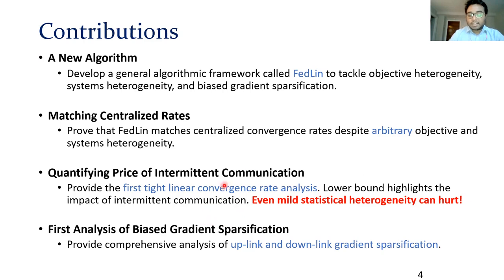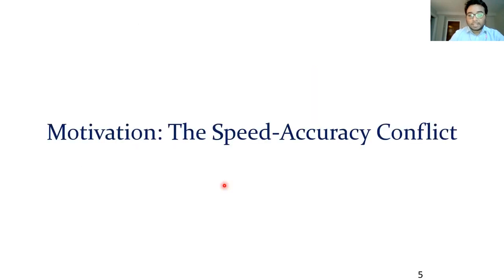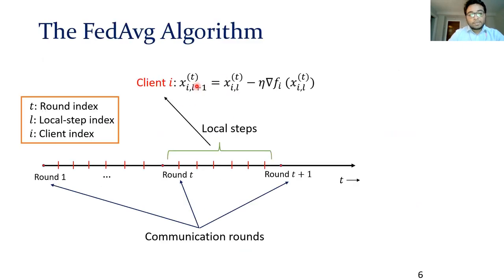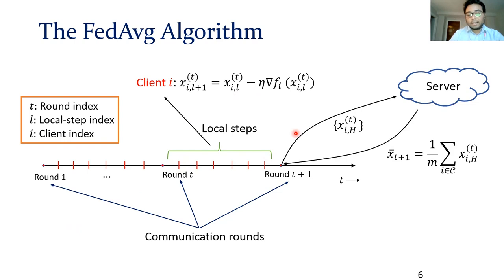Now, before I get to our results, let's quickly go over what we know about existing algorithms. The most popular FL algorithm, known as FedAvg, tries to minimize communication by looking at only periodic communication between the clients and the server, which takes place in rounds. In between two rounds, a client just performs multiple local steps. These local steps are typically just gradient descent steps on the client's own local loss function. At the end of the round, each client uploads its local model to the server, the server averages these models, and sends it back to each client. And this process essentially repeats itself.